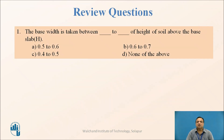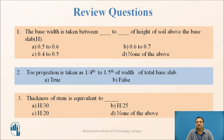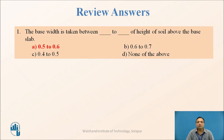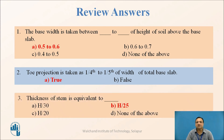Review questions: (1) The base width is taken between dash to dash of total height — the answer is option A: 0.5H to 0.6H. (2) Toe projection is taken as one-fourth to one-fifth of the base width — the answer is True (option A). (3) The thickness of the stem is equivalent to H/25 — the answer is option B: H/25.